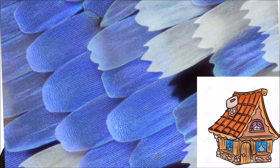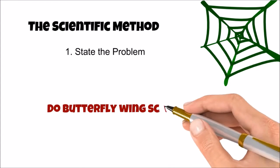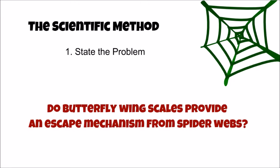similar to shingles on the roof of a house. So the problem question became, do butterfly wing scales provide an escape mechanism from spider webs?